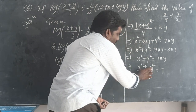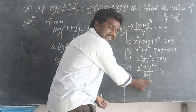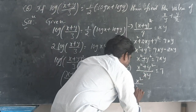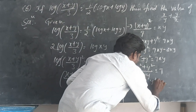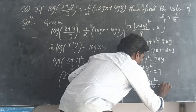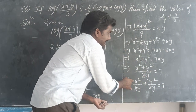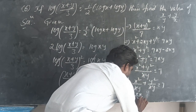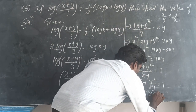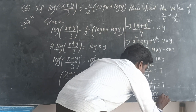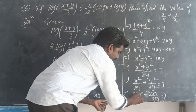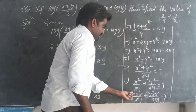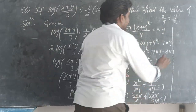Dividing both sides by xy: (x²+y²)/xy equals 7. Separating with common denominator xy: x²/xy plus y²/xy equals 7, which simplifies to x/y plus y/x equals 7.